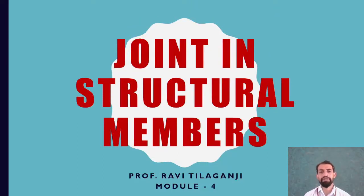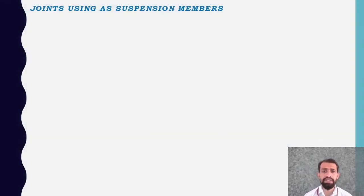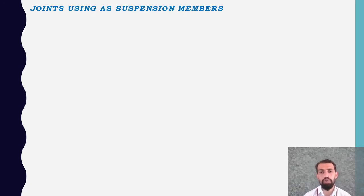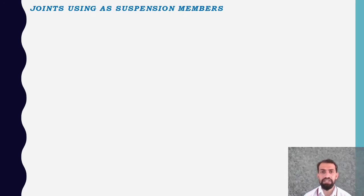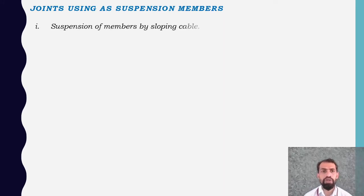Welcome to prefabricated structures. In this video we will be seeing about joints in structural members. This is Module 4 on joints using suspension members — one particular type of jointing in prefabricated structures where we need to understand how suspension members, meaning cables, ropes, or chains, are used to prepare joints. The first type is suspension of members by a sloping cable.